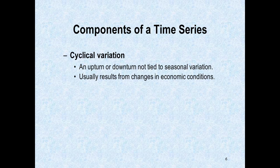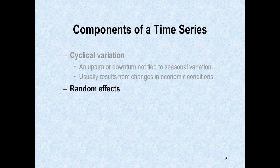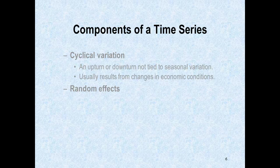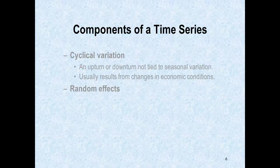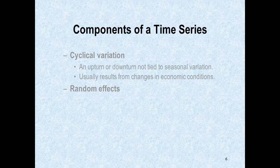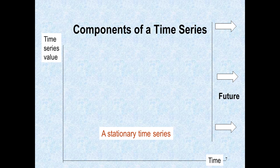The fourth component is random effects, and these are the worst for a statistician to predict. Random effects just happen — they weren't tied to seasonal or cyclical variation. Maybe you're working at Burger King and two bingo buses pull up unexpectedly, so instead of serving 40 customers this hour you serve 400. Enrollment in certain majors goes up and down and we're not really sure why — it's just a random effect.